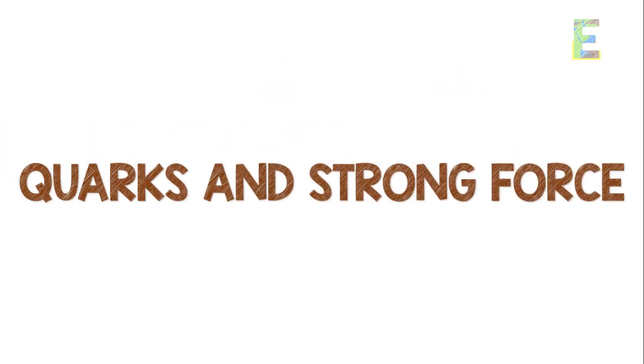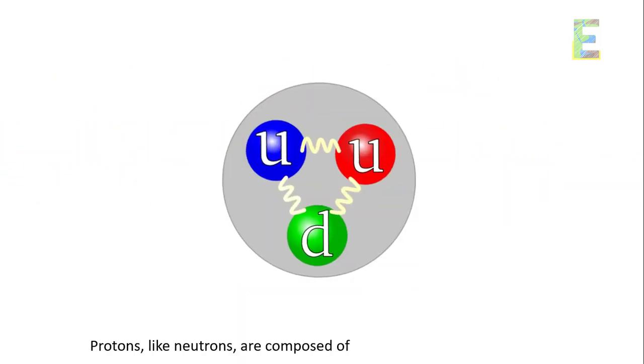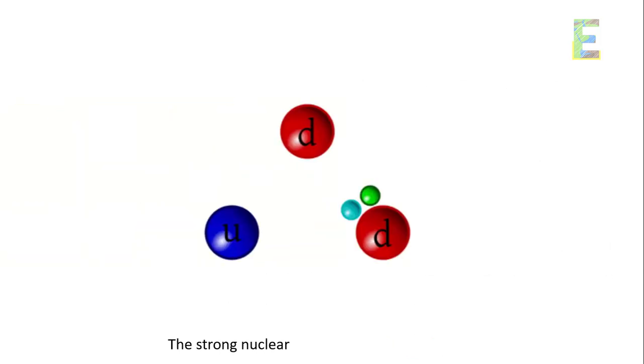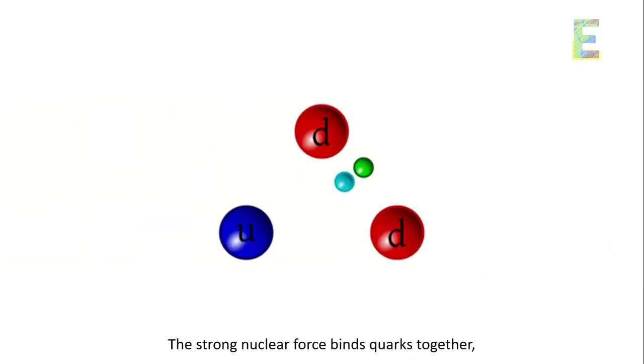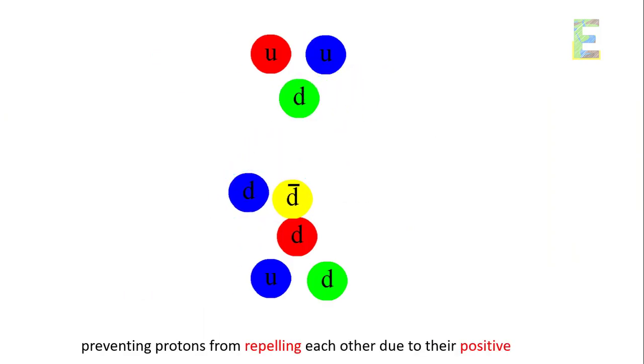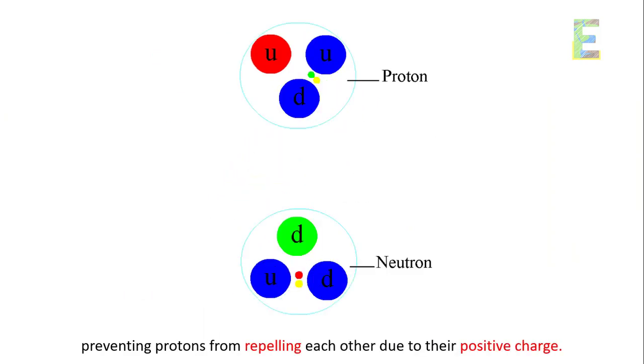Quarks and strong force. Protons, like neutrons, are composed of smaller particles called quarks. The strong nuclear force binds quarks together, preventing protons from repelling each other due to their positive charge.